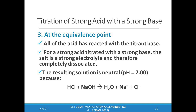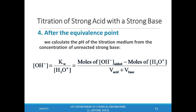At the equivalence point, all of the acid has reacted with the base. For a strong acid/strong base titration, the pH at the equivalence point equals 7 — the solution is neutral. The equivalence point region is the steepest portion of the curve. After the equivalence point, we have excess titrant. We compute the hydroxide ion concentration as the moles of added base minus the moles of original acid, divided by the total volume. Then we use the Kw expression to get the hydronium ion concentration and calculate pH.